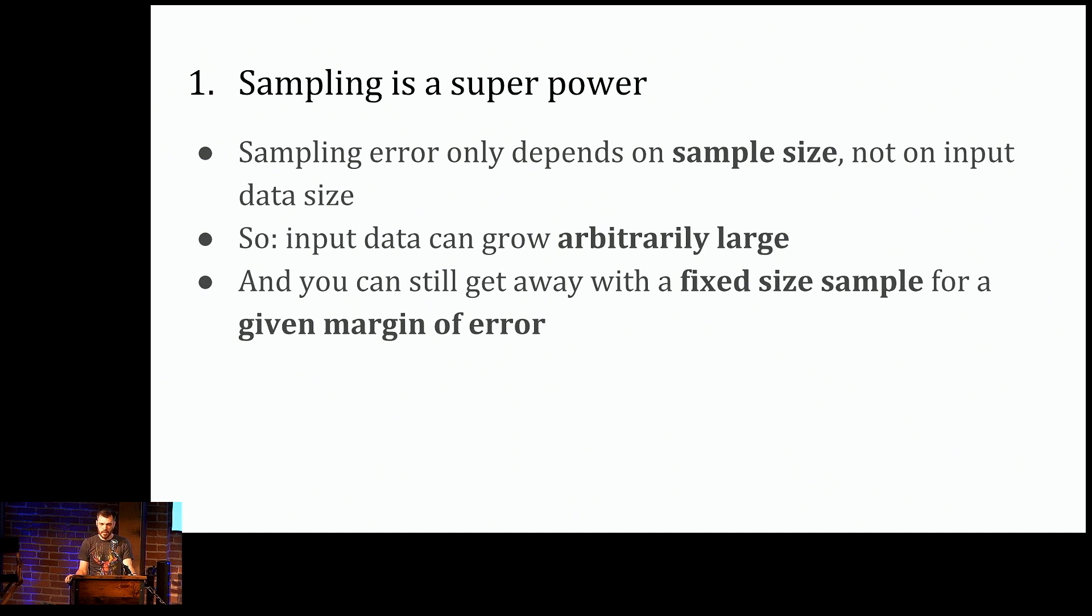But you could really make this difference as big as you like because the systems that query over the full source data have to read all of it. But the sampling system only has to read a fixed amount of data regardless of how big the source data is. And this is really quite a profound thing about sampling. And why is this? Well, the error that you get, the cost that you pay, depends only on the sample size and not on the source data size.